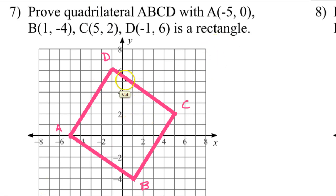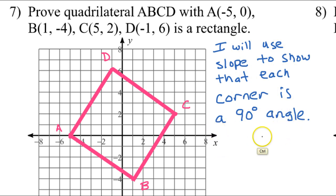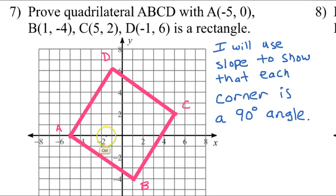Our strategy will be to prove that the vertices are at right angles. You should write that down: I will use slope to show that each corner is a 90-degree angle. Let's go ahead and find each slope. It will be helpful if we record the slopes in order so we can show which ones are consecutive.